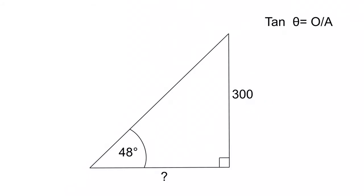Tangent of theta is equal to opposite over adjacent. So let's plug the numbers in that we have. The tangent of 48 degrees is equal to 300 over what? We punch tangent 48 in our calculator, and we get 1.11 is equal to 300 over what?